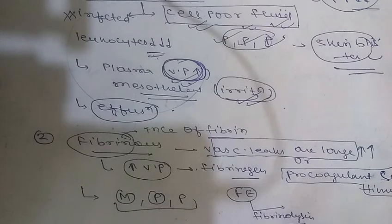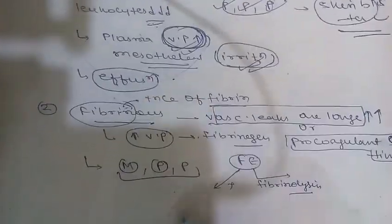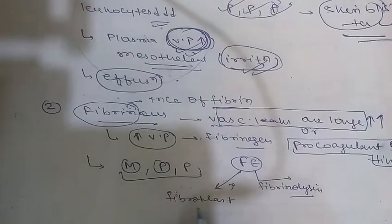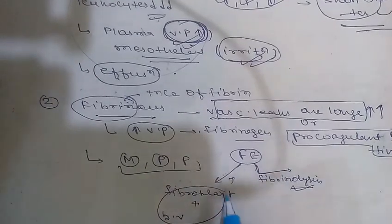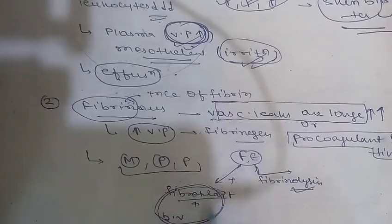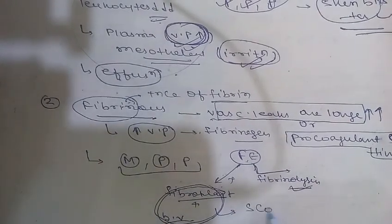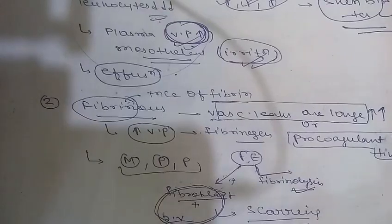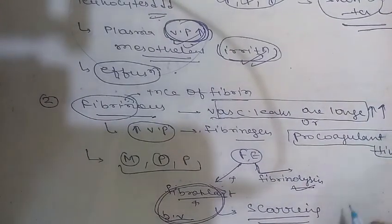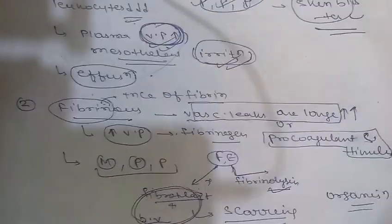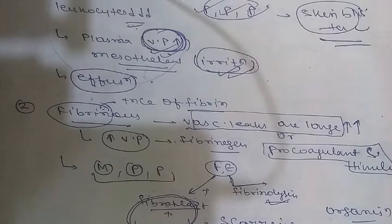If fibrin is not removed over time, it will stimulate the growth of fibroblasts and blood vessels, leading to scarring. The conversion of fibrinous exudate to scar tissue is also known as organization — an important term to remember.